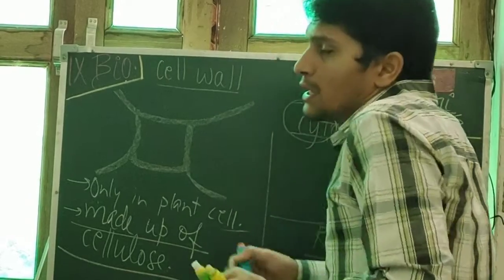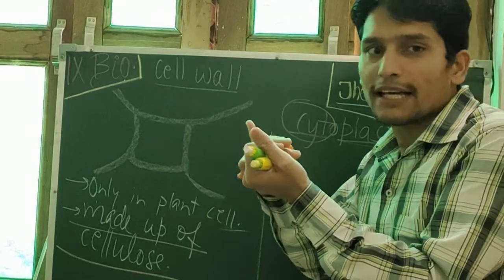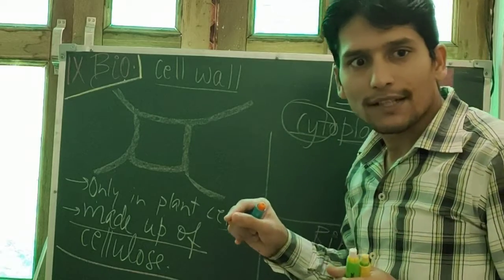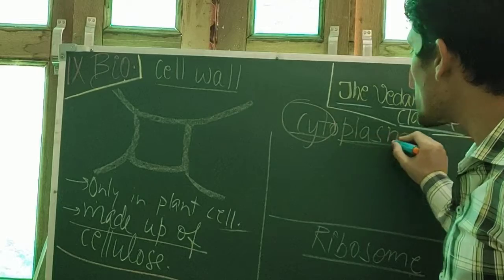Next, cytoplasm. Three parts: cytoplasm, cell membrane, and nucleus. Nucleus we completed. Today we are discussing about the cytoplasm. Cyto means cell, plasm is liquid.